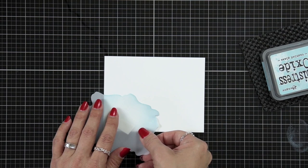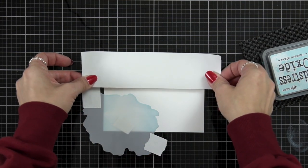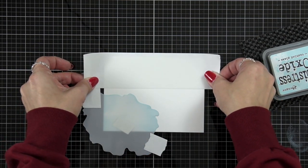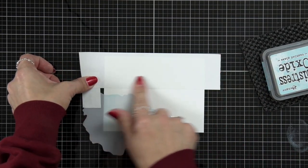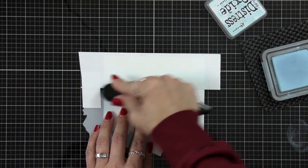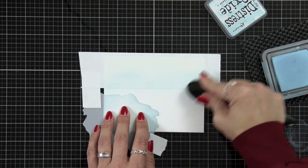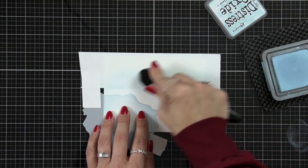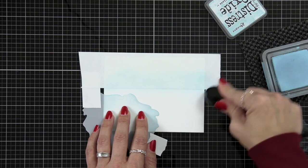I am placing the mask over that watercolor wash area that I just ink blended and then I'm taking a piece of two inch post-it tape and I lined that up with the grid lines of my surface to create a straight line. So that way I have my sky, my land, and my water.